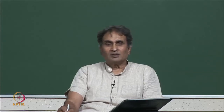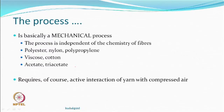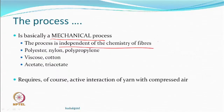Spun yarns have short staple length fibres, but you can still get an increased amount of bulk through air jet texturing. One very interesting aspect is that this is basically a mechanical process — all interactions with fibres and yarn are mechanical in nature: bending, loop formation, entanglement. In some sense, it is independent of the chemistry of the fibre — it does not matter if it is polyester or nylon.